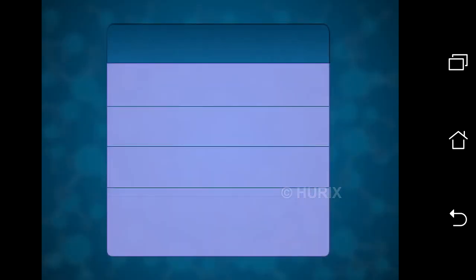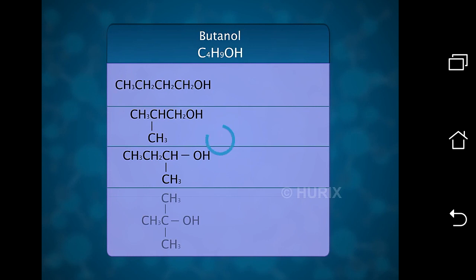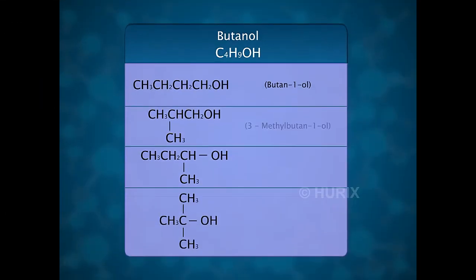The molecular formula of butanol is C4H9OH. It has various structures as shown here. The IUPAC names are butanol, 3-methylbutanol, 2-methylbutanol, 2-2-dimethylpropanol. All of them have different structural formulae and the same molecular formula, C4H9OH. Hence, all these compounds are called isomers of butyl alcohol. Let's study how these isomers are classified.